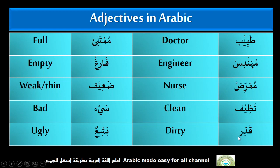Nazif — Clean. Qazir — Dirty. Mumtalya — Full. Farid — Empty. Zahif — Weak, Thin. Say — Bad. We can read with double dhamma or with sukun as you can see here. Say — Bad. Bashir — Ugly.